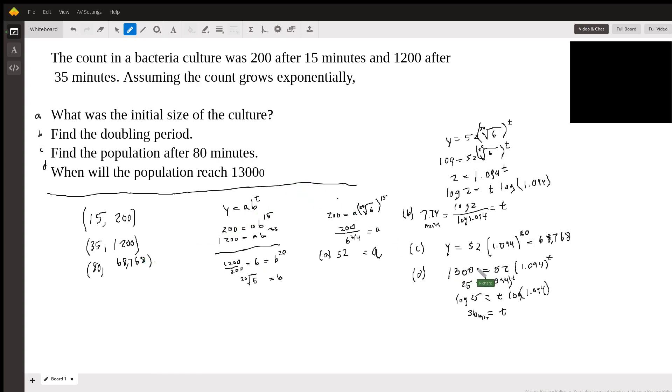Oh, I used 1,300. I'm supposed to use 13,000. Sorry about that. So 13,000 divided by 52. That's 250. Okay, so let's recalculate this. Log of 250 divided by the log of 1.094 gives me 61.